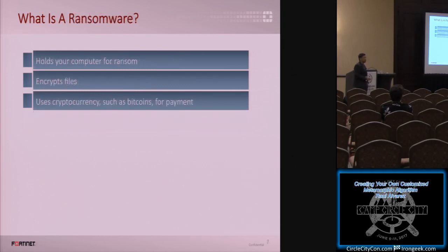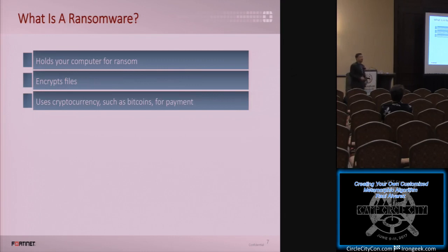As for ransomware — this one is not about WannaCry. When we talk about ransomware, most of the time it encrypts your files. And then, of course, if you want to recover them, you have to pay with Bitcoin and use Tor. That's the reason why ransomware is in a boom industry now, because the criminals can get away with it because of Tor and Bitcoin payment.